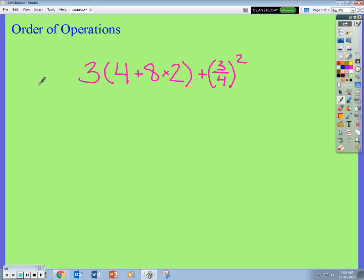I have parenthesis. I have exponents. Let's simplify what's inside the parenthesis first. Inside the parenthesis, I have two terms separated by an addition sign. First term, second term. I cannot simplify the first term, just 4. The second term I can simplify. 8 times 2 gives me 16.